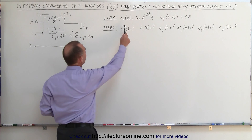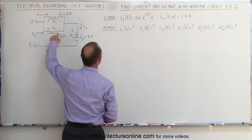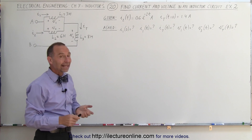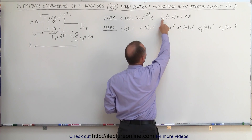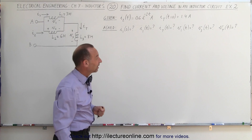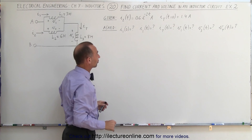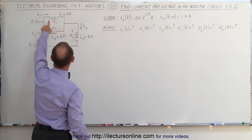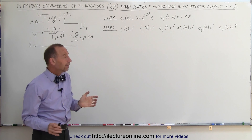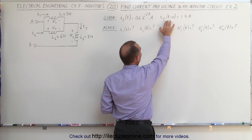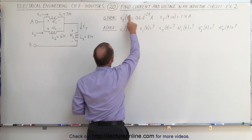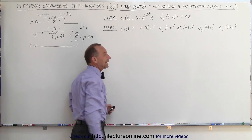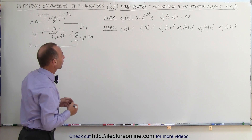We're given that the current as a function of time through the second inductor is equal to 0.6 times e to the minus 2t amps, and that the initial condition of the total current when time equals 0 is equal to 1.4 amps. We're trying to find various things, starting with the initial current when time equals 0 through inductor 1. Since we know the total initial current is 1.4 amps, we need to find the initial current through inductor 2 and subtract that from the total.